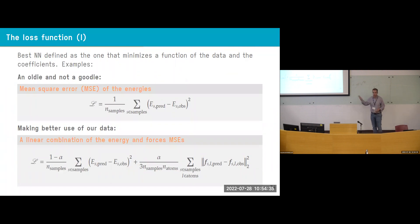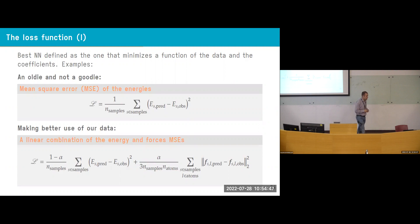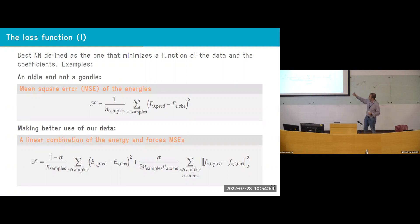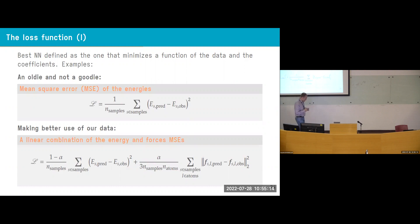A better idea is to train on forces. We don't have this problem with forces, and we obtain 3N force values from a DFT calculation. By the virtue of the Hellmann-Feynman theorem, we don't need derivatives of the wave functions, so forces come routinely. We build a linear combination of the mean square errors of energies and forces — this could be called Sobolev training, as we train in the Banach space formed by the function and its derivatives.